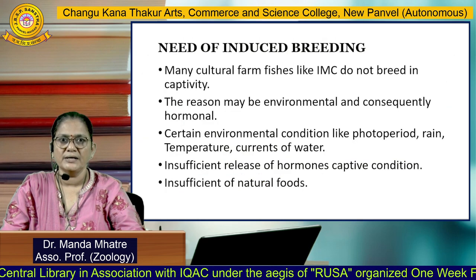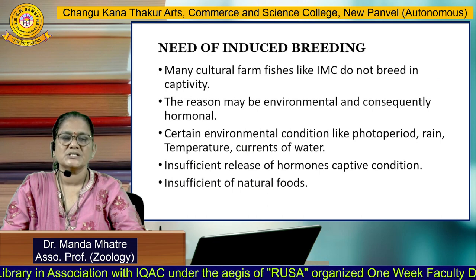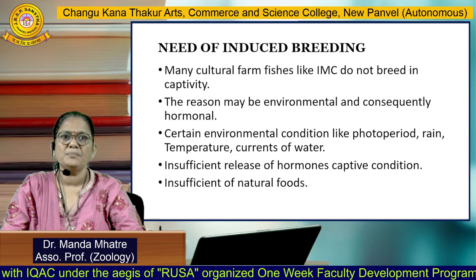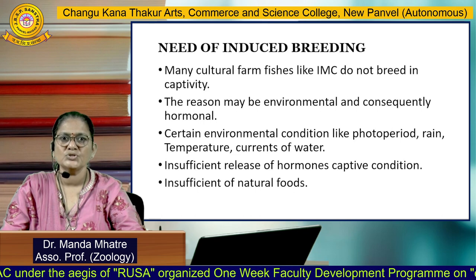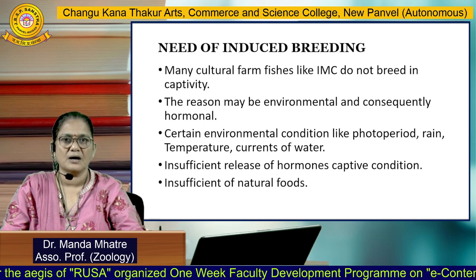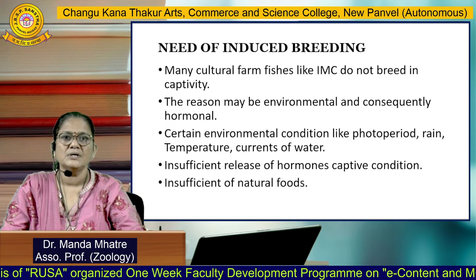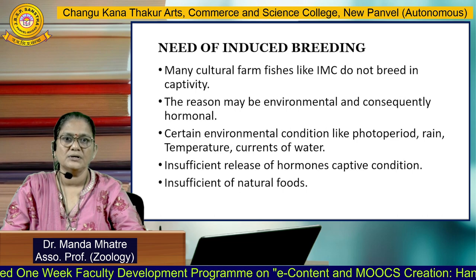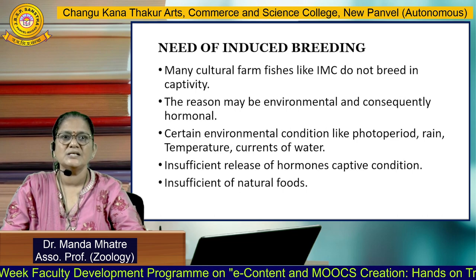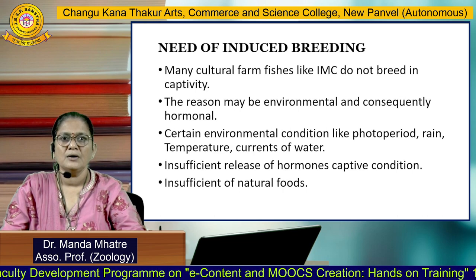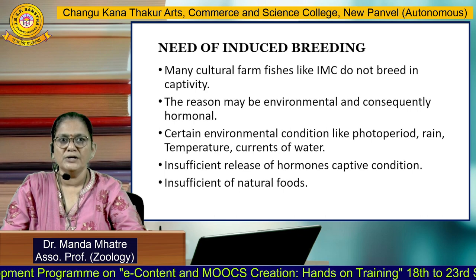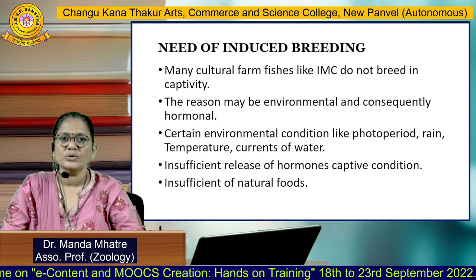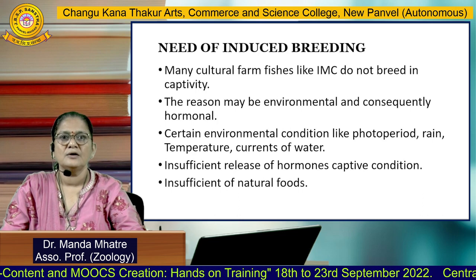Why do we need this technique? Many cultured farm fishes like Indian major carps do not breed in captivity. The reason behind this is environmental factors and consequent hormonal issues, because all Indian major carps breed in flooded rivers. Certain environmental conditions like photoperiod, rain, temperature, and water currents are insufficient in captive conditions, which are important for triggering the hormones needed for induced breeding.